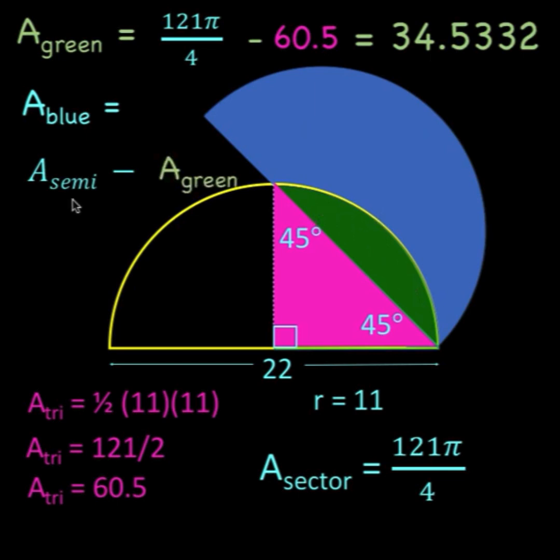What is the area of the semicircle? It's π r² over 2, where r is 11. So 11 squared is 121 times π divided by 2 to get the area of the semicircle. And the area of the green region is already calculated to be 34.5332.